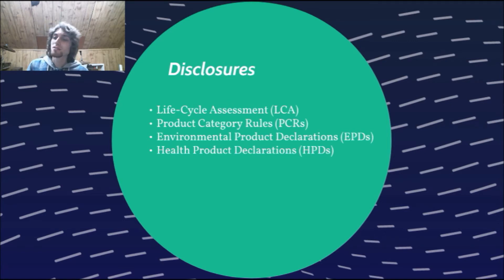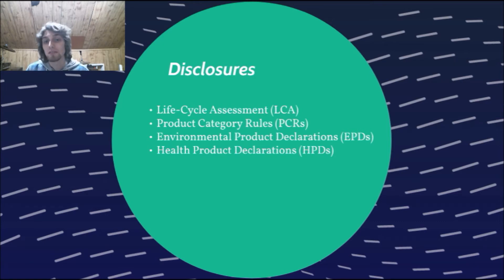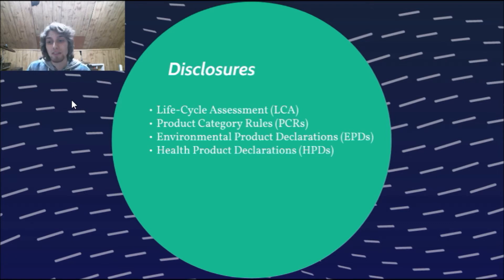There are two types of life cycle assessments. A whole building LCA focuses on the entire building's materials and its entire life cycle. Or you could just do product and material LCAs, which focus on a specific product's life cycle from beginning to end — you need to pick 20 specific materials for that. Product category rules set specific rules and requirements based on ISO specifications — the International Organization for Standardization — for developing environmental declarations in product areas.